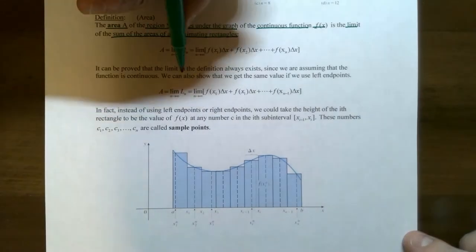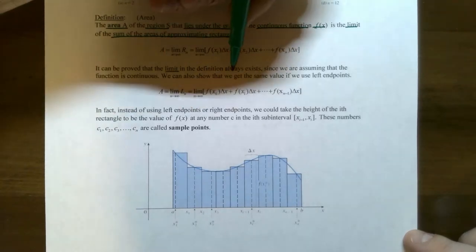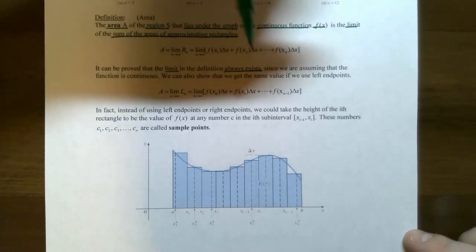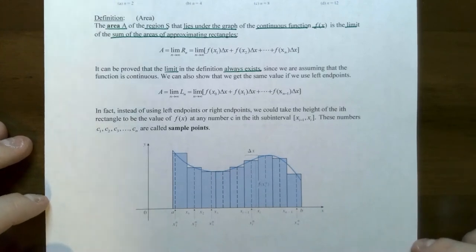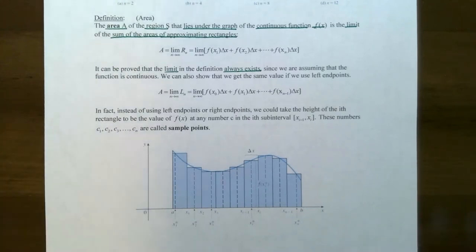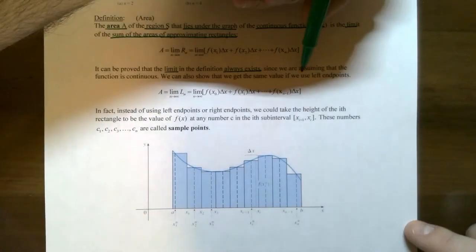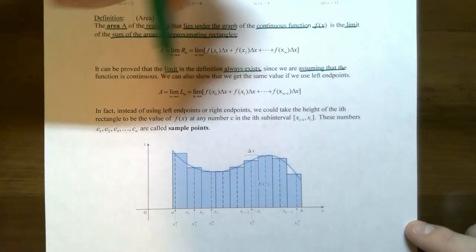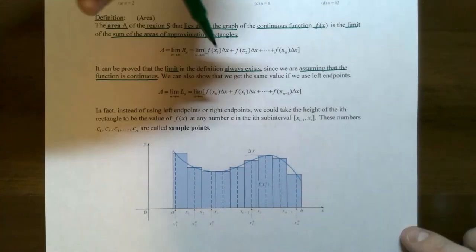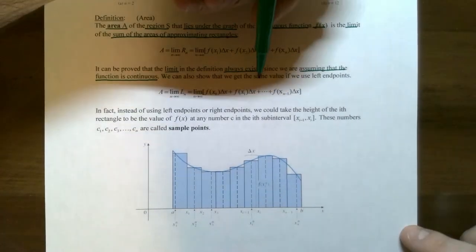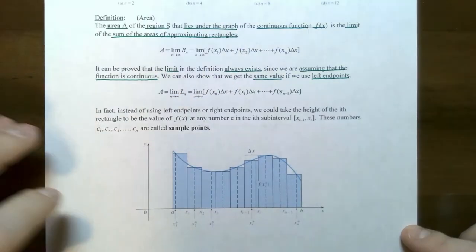It can be proved that if this limit exists, that is the area under the curve f of x from the left endpoint to the right endpoint, x equals a to x equals b, bounded by the curve, as long as the function is continuous. We'll also get the same value if we use the left endpoints, as we saw in the last video.